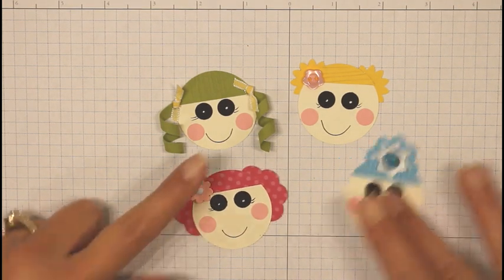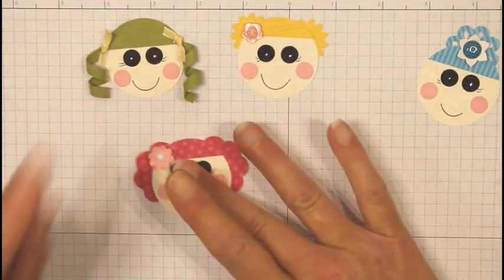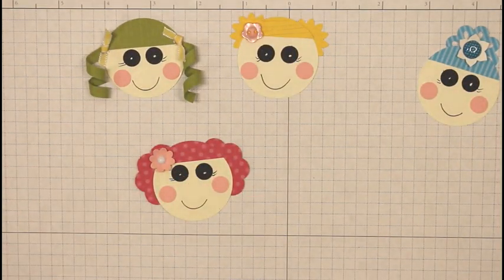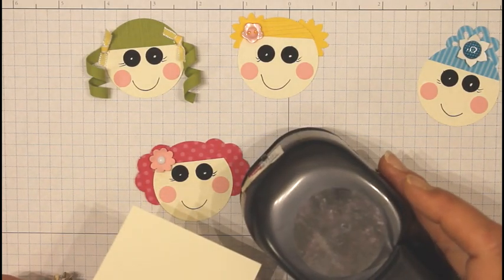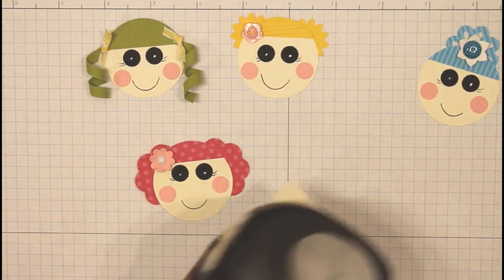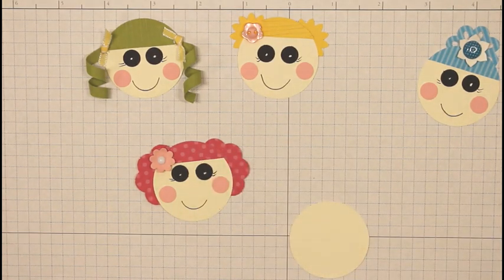So the one we're going to be making today is this one here. And the first thing you need is a piece of very vanilla cardstock and a one and three-quarter inch circle punch. This will be the base of our face.